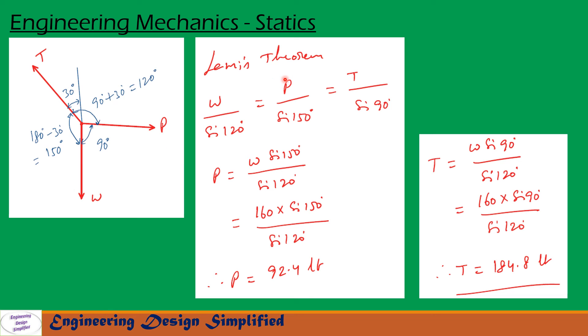Now, let us apply Lamy's theorem. Lamy's theorem is W by sine 120 equals P by sine 150 equals T by sine 90. From the first two terms, we can write P equals W sine 150 by sine 120. After substituting the values and simplification, we get P equal to 92.4 pounds.